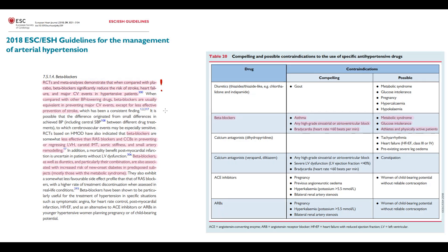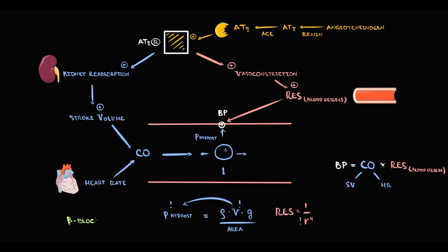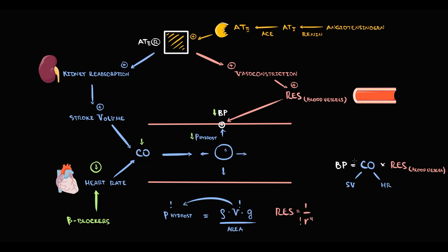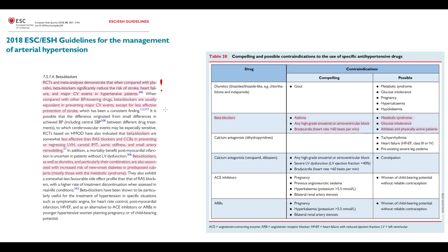The next class of antihypertensive agents is beta blockers. Their major effect is decrease in heart rate, which causes decreased cardiac output, and thereby lower hydrostatic pressure and lower blood pressure. Beta blockers have similar efficiency to other antihypertensives in most aspects, but they are less effective in prevention of strokes, left ventricular hypertrophy, aortic stiffness, and small artery remodeling. This is why calcium channel blockers are preferred in most cases, with beta blockers serving as a reserve option.